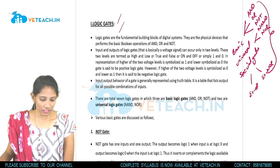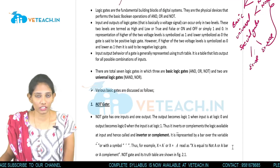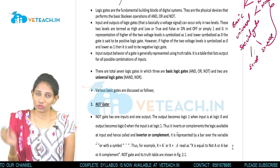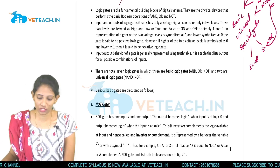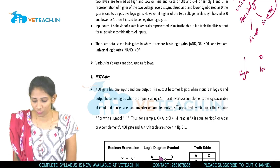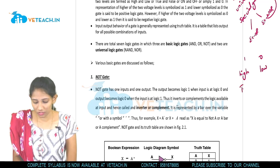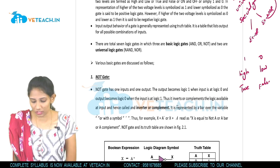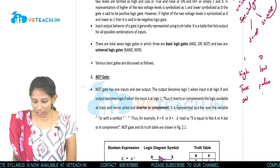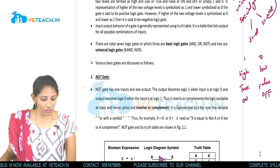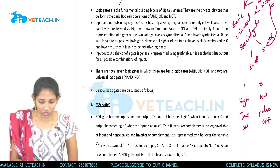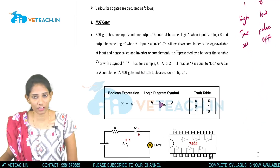In logic gates, the inputs and outputs can occur only at the levels of one and zero — only two levels. One is termed as high, or true, or on condition; and zero is termed as low, or false, or off condition. The input and output behavior of a gate is generally represented using truth tables.